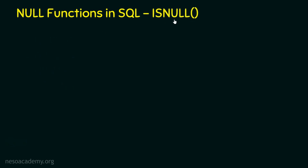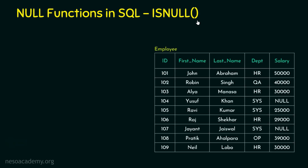When we talk about the ISNULL function, the idea is simple. The name itself says "is it null?" and the answer is going to be either yes or no — a boolean value. It returns true if it is null, and false if it is not null. The working of ISNULL is straightforward. Let's see an example using the employee table, which has attributes such as id, first name, last name, department, and salary. For some reasons there are null values for some records in the table.